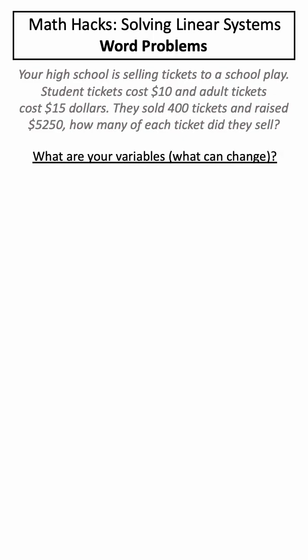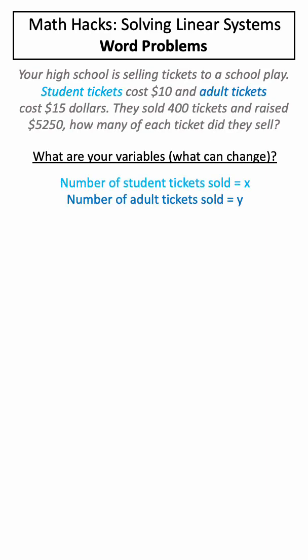The first thing we need to do is to define our variables. In this problem, the two variables are the number of student tickets sold, which we'll define as x, and the number of adult tickets sold, which we'll define as y.